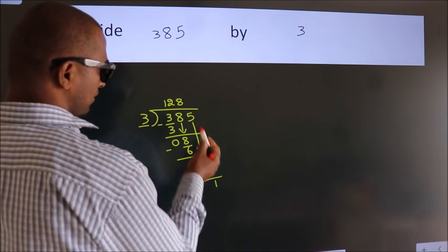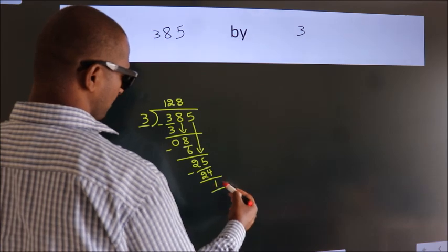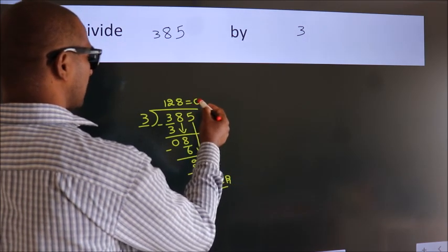After this, no more numbers to bring it down. So, we stop here. This is our remainder. This is our quotient.